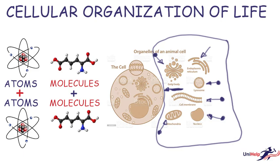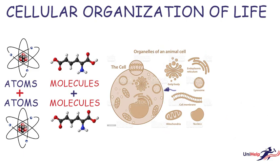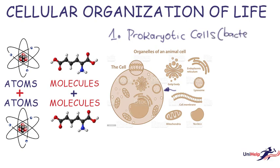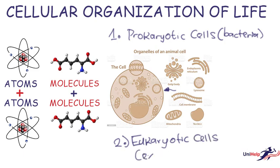These cells could also combine to form tissues. But before we look at that, let's look at the different types of cells. We have the prokaryotic cells — these are the cells found in organisms like the bacteria — and the eukaryotic cells, which are the cells found in all other organisms except those in kingdom Monera.